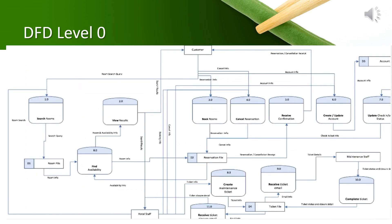This is the data flow diagram for the hotel information system. Let's focus on the transition from the list of functional requirements to the context diagram and to the DFD. In DFD level 0, we have 11 processes, equivalent to the number of data flows in the context diagram — this is called a balanced diagram. You may take a closer look at the DFD. As far as this chapter is concerned, please give more focus on the data store from this DFD.